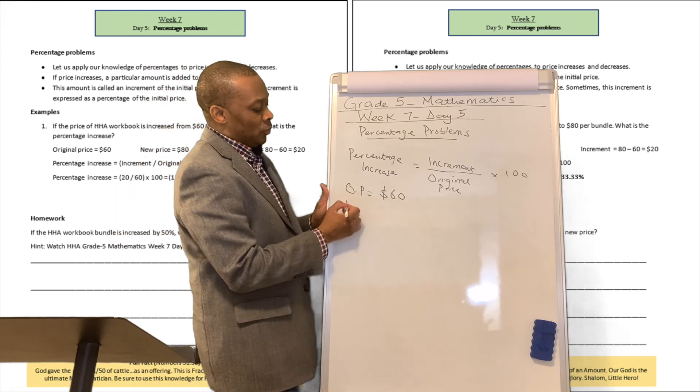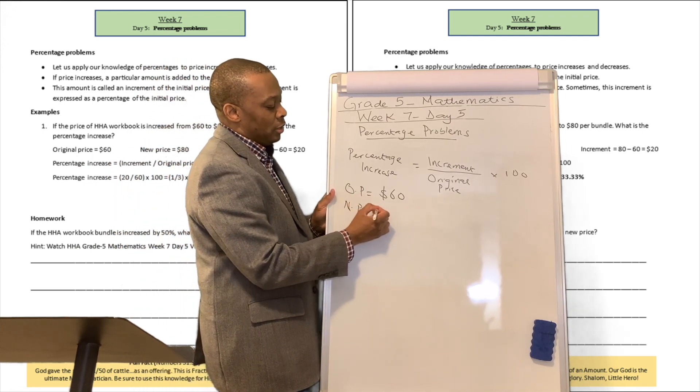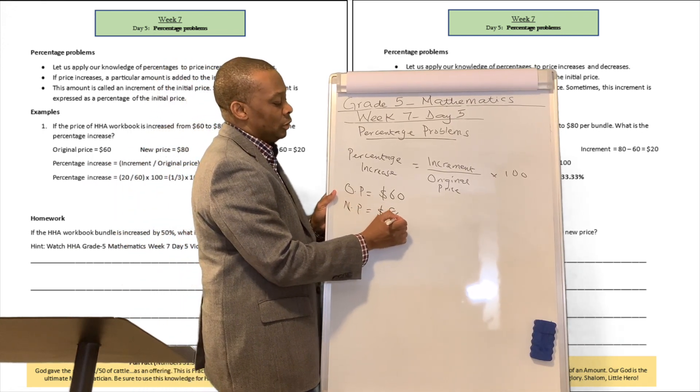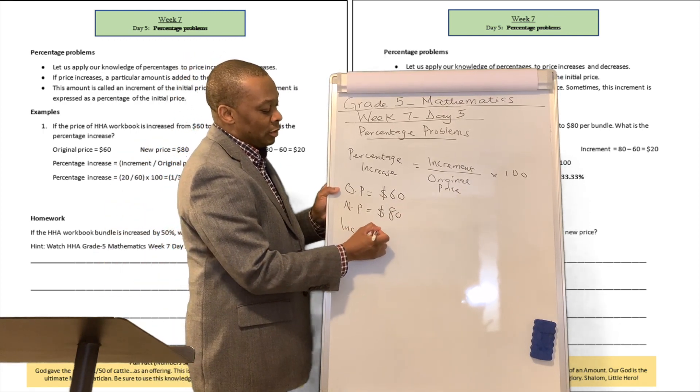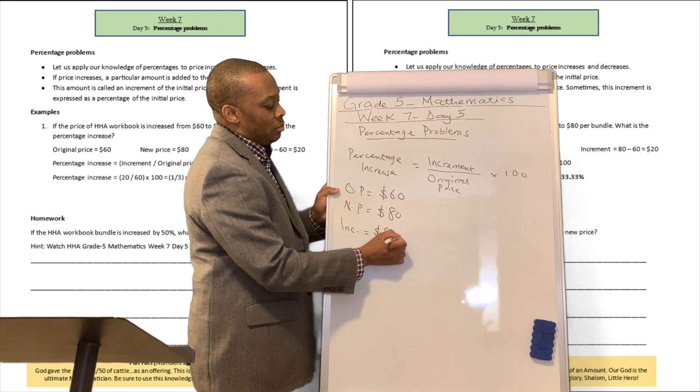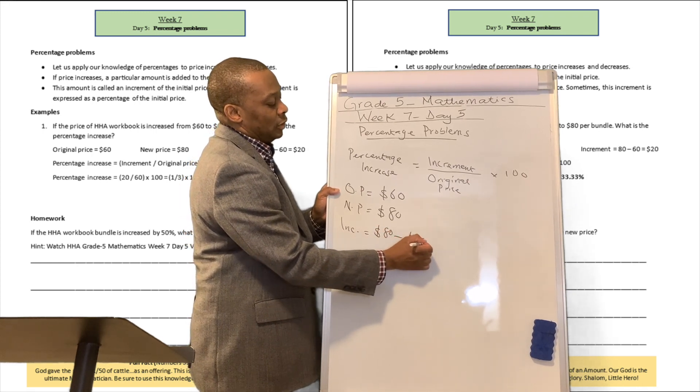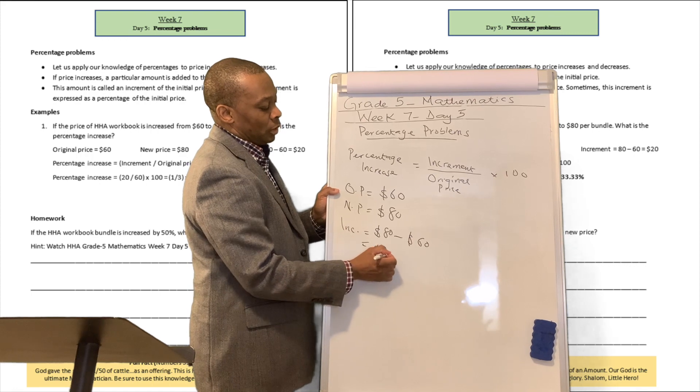The new price, which I will call NP, is equivalent to $80. So what is the increment? Well, the increment, INC, will be equivalent to $80 minus $60, which is going to be just $20.